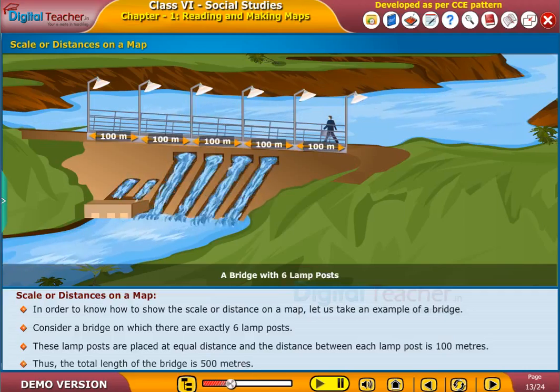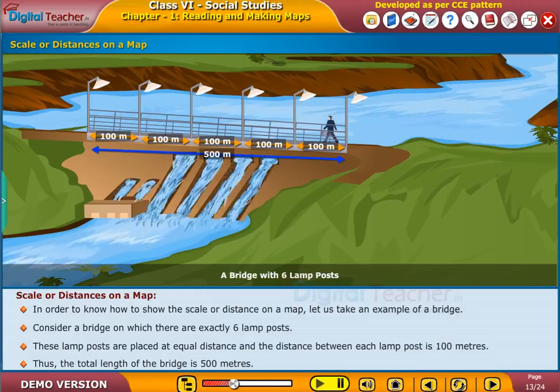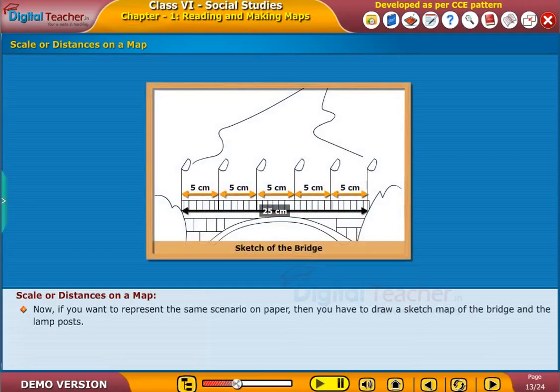Thus, the total length of the bridge is 500 meters. Now, if you want to represent the same scenario on paper, then you have to draw a sketch map of the bridge and the lamp posts.